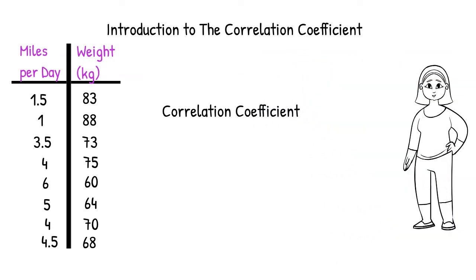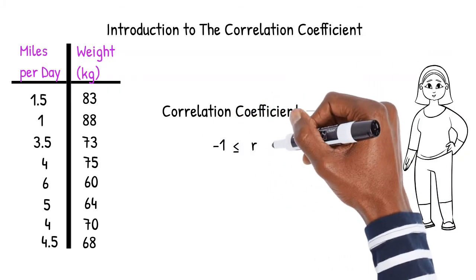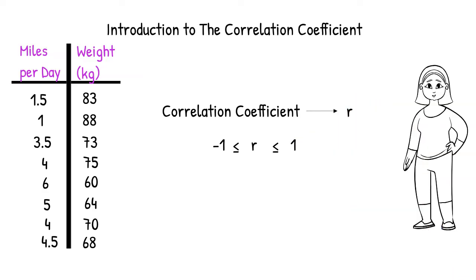The correlation coefficient is a number that tells us how closely clustered our points are to the best fit line for our data. The correlation coefficient, otherwise known as r, is a number between negative 1 and 1.